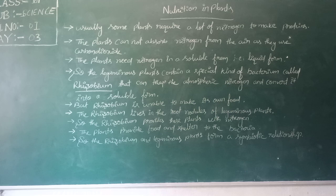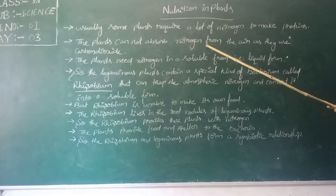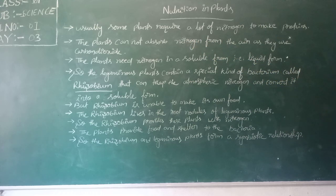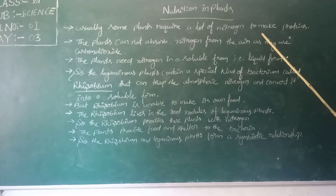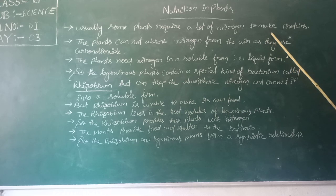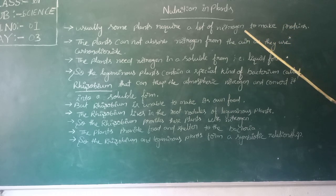Which kind of plants need nitrogen for making proteins? Leguminous plants — leguminous plants are those that produce pods, like peas. These plants require nitrogen to make proteins.